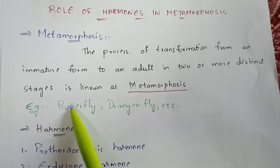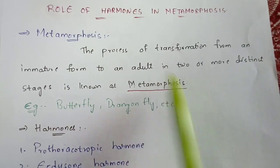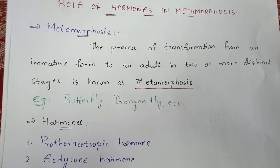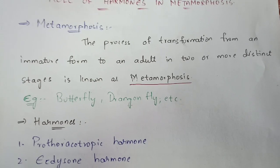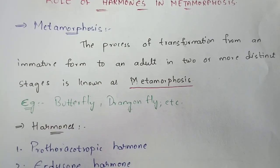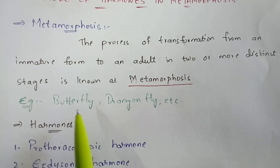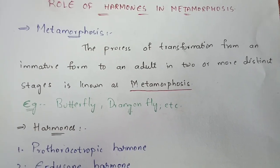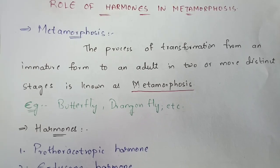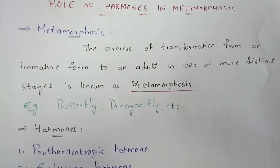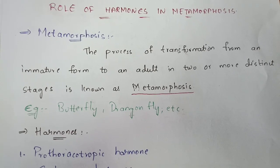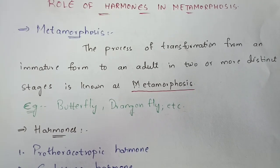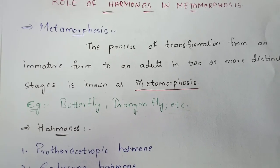Examples include butterfly and dragonfly. I'm going to take the example of butterfly because normally since your childhood you know the life cycle of butterfly. The life cycle of butterfly includes four stages: hatching of egg is the first stage; second stage is formation of larva; third stage is formation of pupa, that's nothing but cocoon; and the final stage is formation of adult, that is formation of the butterfly.